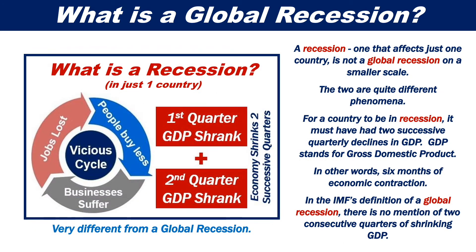A recession that affects just one country is not a global recession on a smaller scale. The two are quite different phenomena. For a country to be in a recession, it must have had two successive quarterly declines in GDP — in other words, six months of economic contraction. In the IMF's definition of a global recession, there is no mention of two consecutive quarters of shrinking GDP.